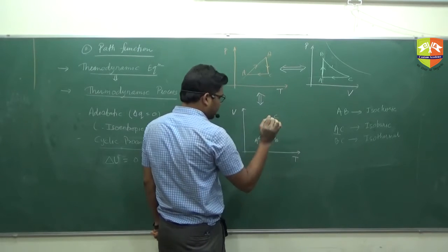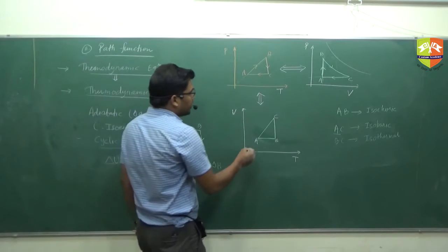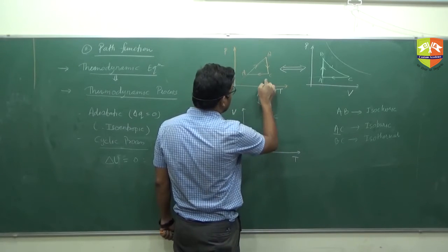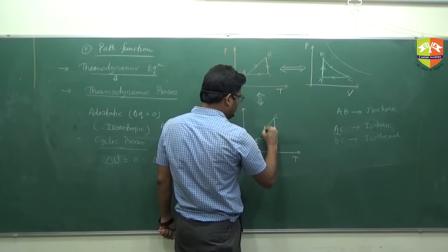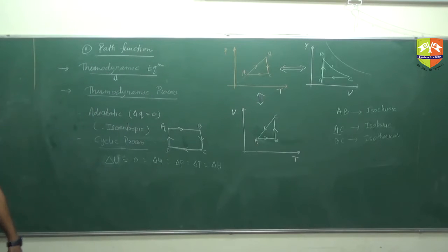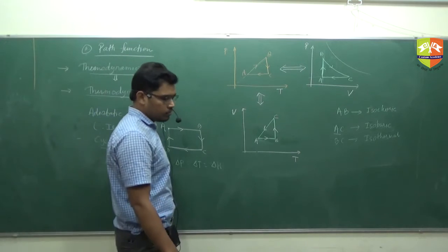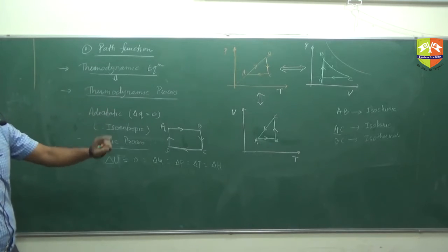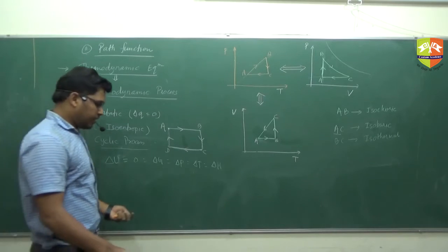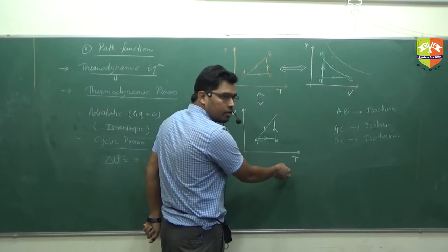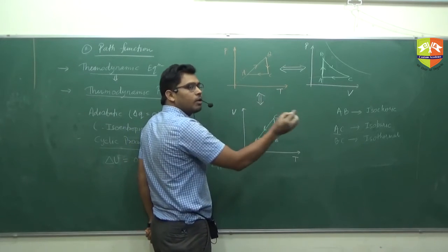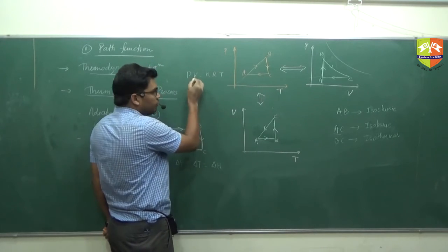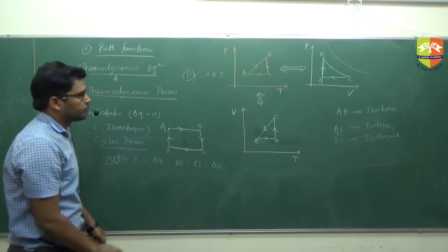A to B is isochoric. B to C is isothermal — as pressure decreases, volume should increase. C to A is isobaric. Sometimes they ask you this conversion in questions also. For the VT graph: if you are drawing it, at constant pressure the line must pass through the origin — y = mx. Since PV = nRT, at constant pressure, the VT graph must pass through the origin.